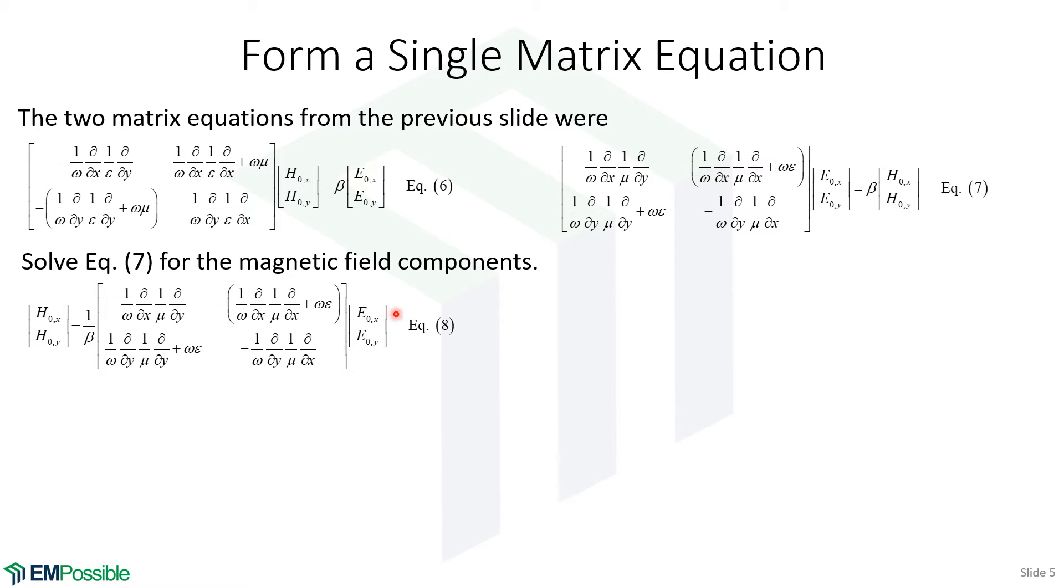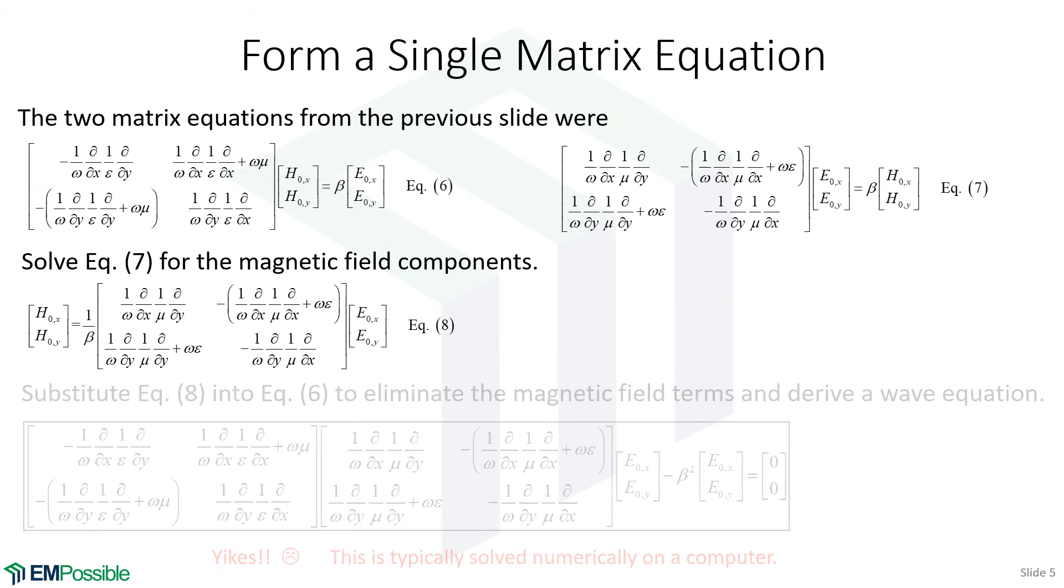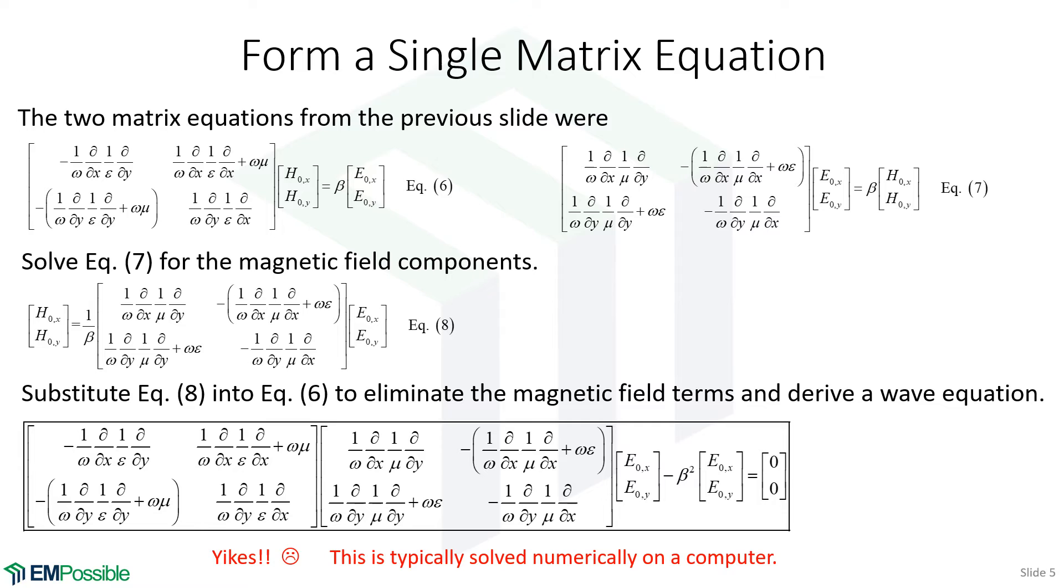Now what we can do, we have an expression for the magnetic fields. We can plug that in for the magnetic fields in equation 6. Now we'll have a big matrix equation just in terms of the electric fields. And so in fact, that's the equation that we would use to do hybrid mode analysis.